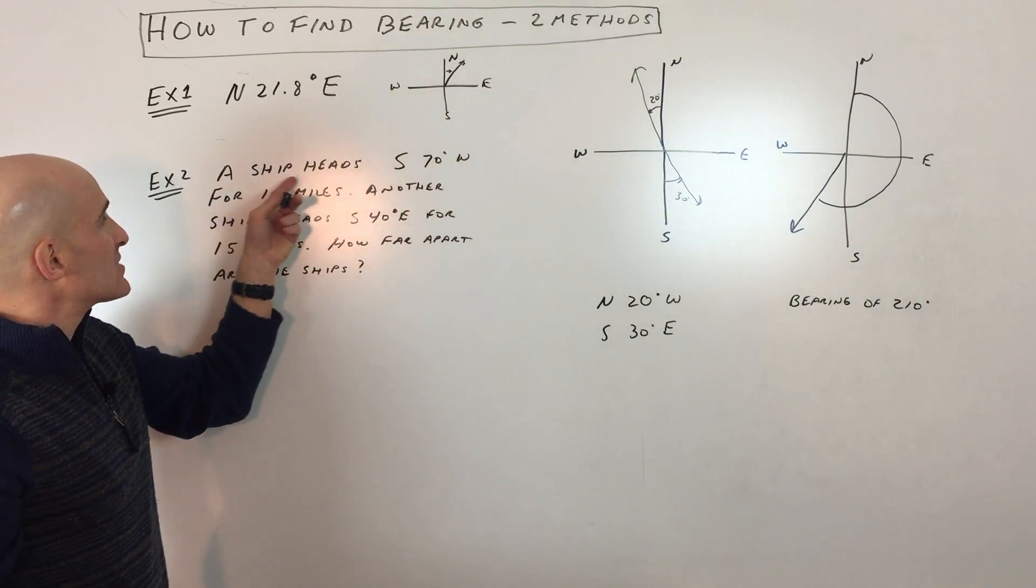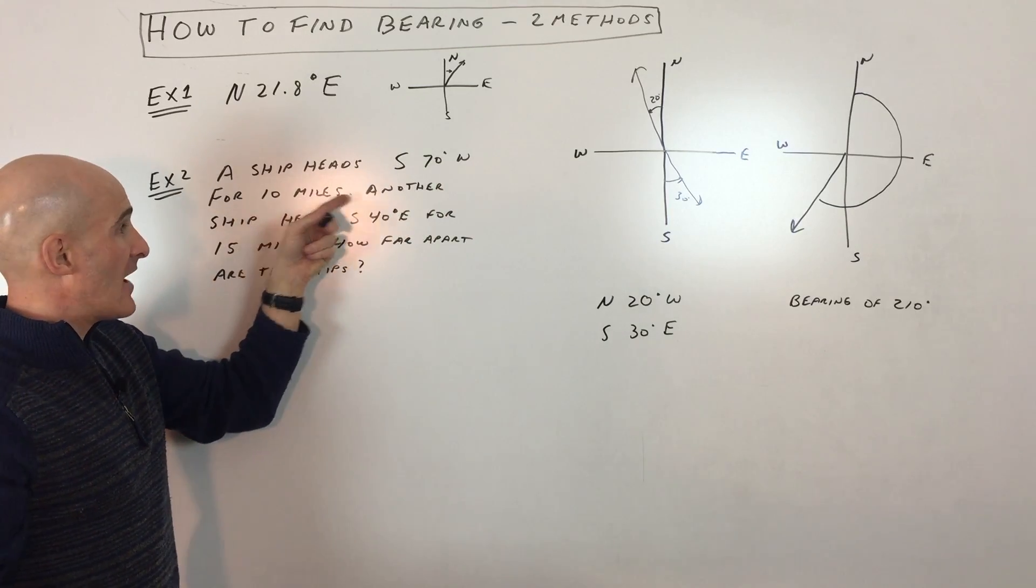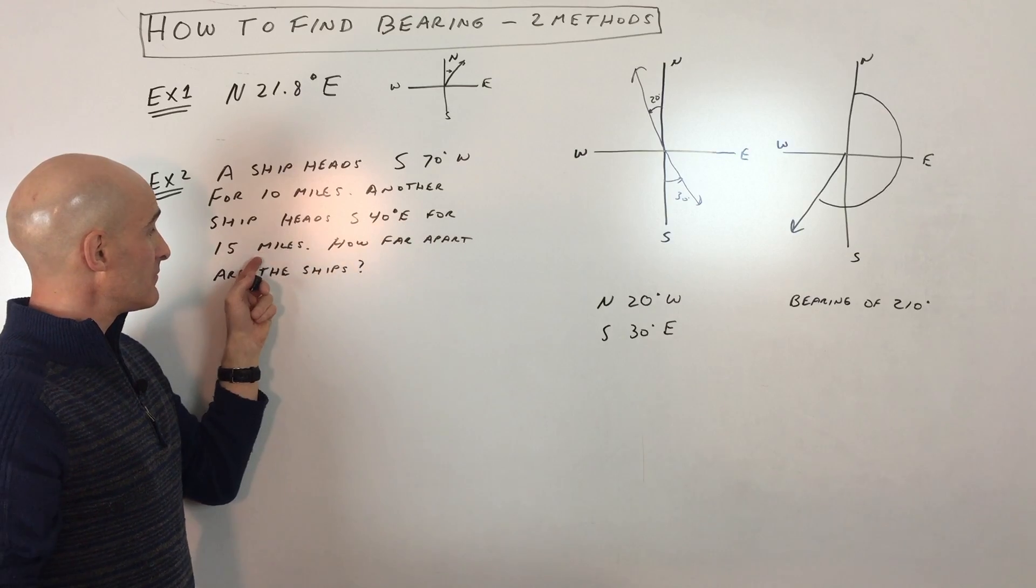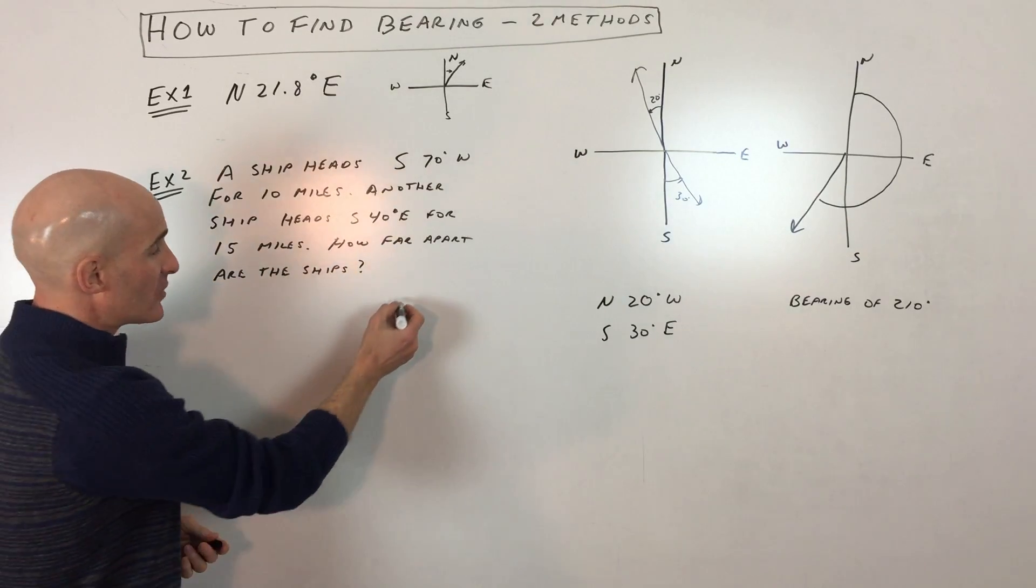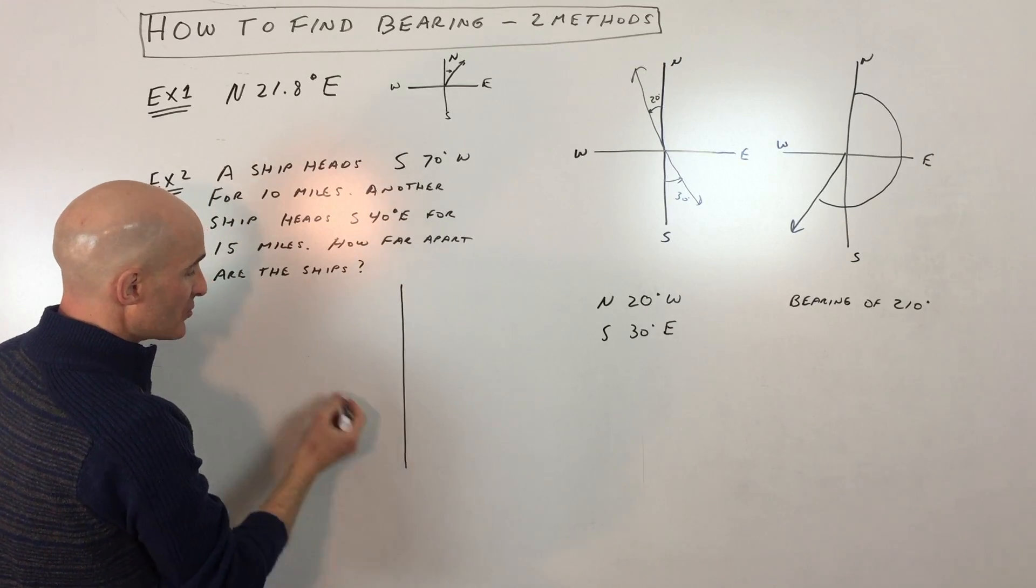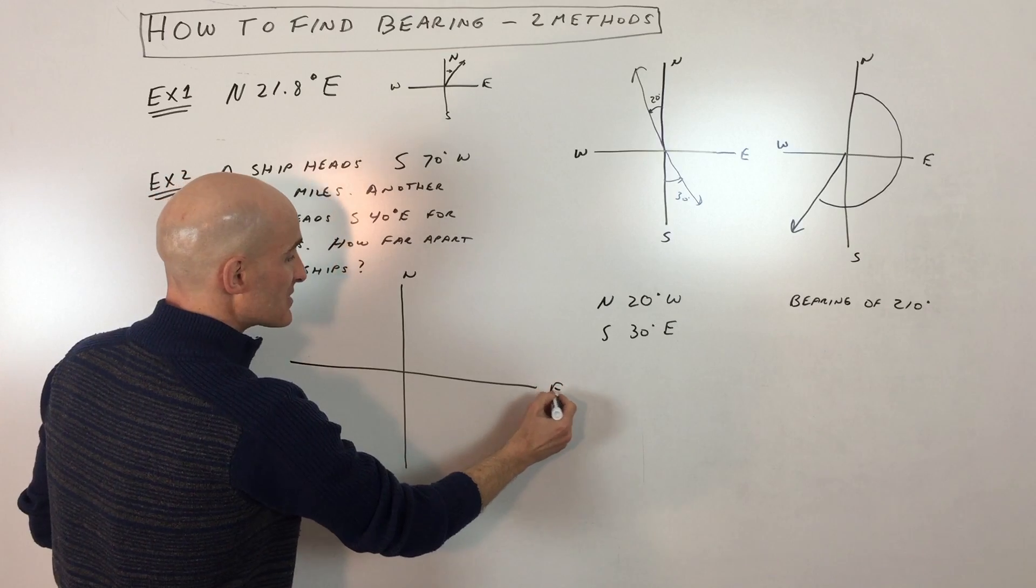Second example, it says a ship heads south 70 degrees west for 10 miles. Another ship heads south 40 degrees east for 15 miles. How far apart are the ships? Okay, this is a good problem. Let's see if we can draw this. What you want to draw is you want to draw your coordinate axis like this. Label your directions north, east, southwest.